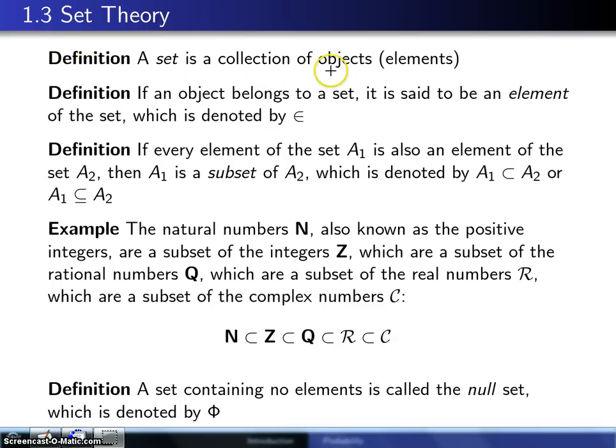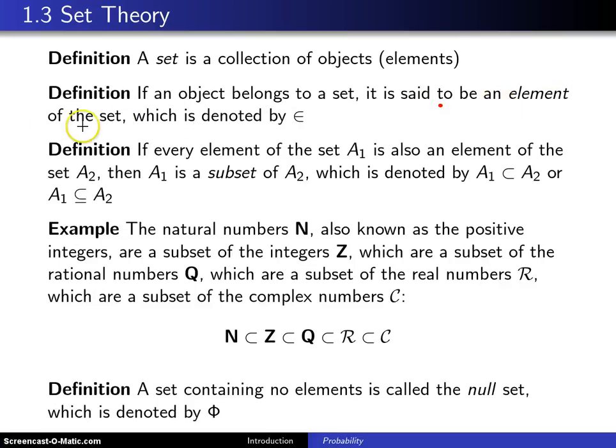A set is a collection of objects, and those objects will be generically referred to as elements. Second definition. If an object belongs to a set, it is said to be an element of the set, which is denoted by this particular symbol right here. And whenever you see that symbol, it should be read as is an element of.